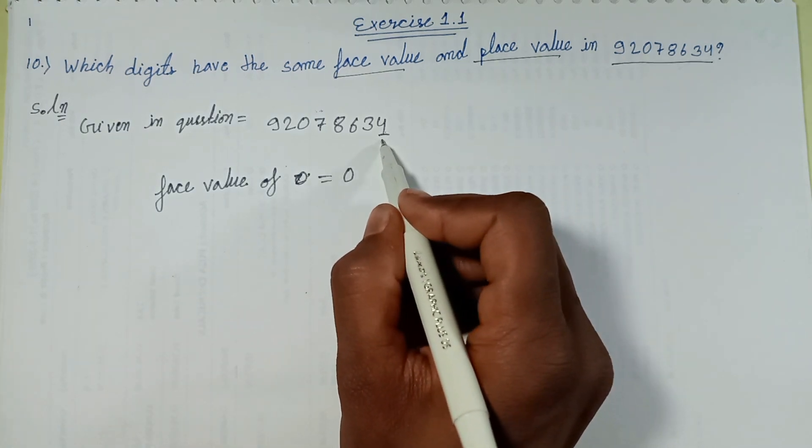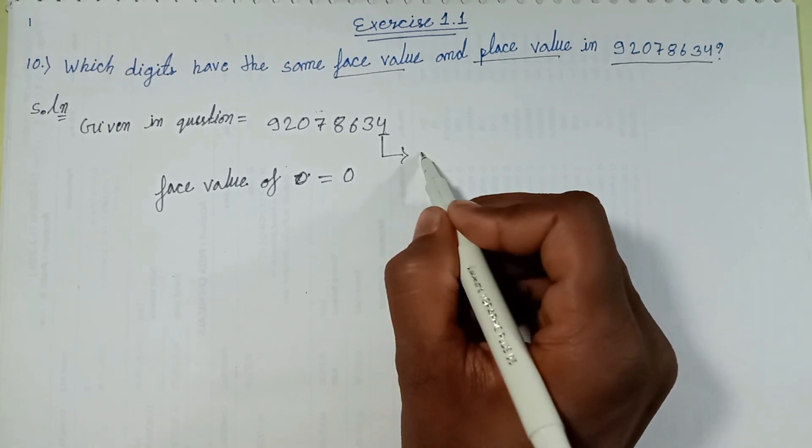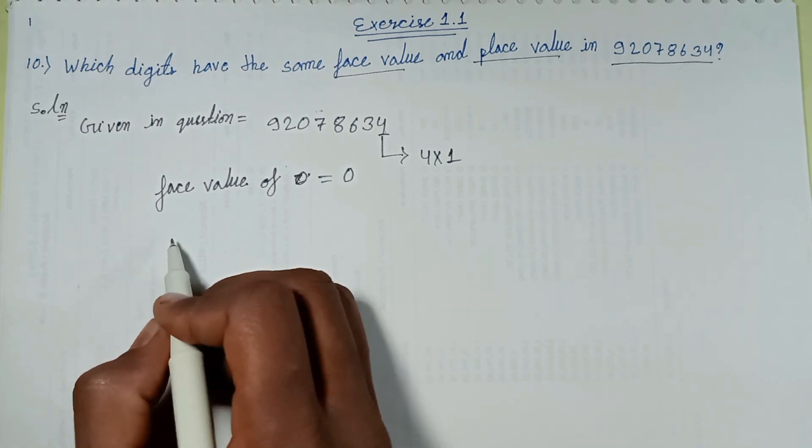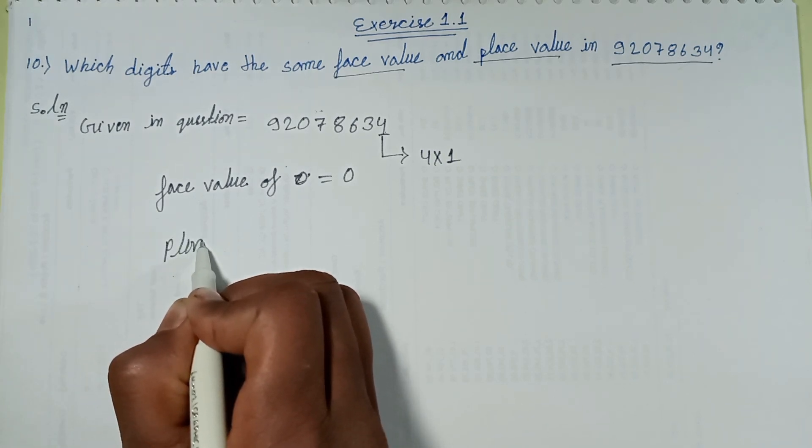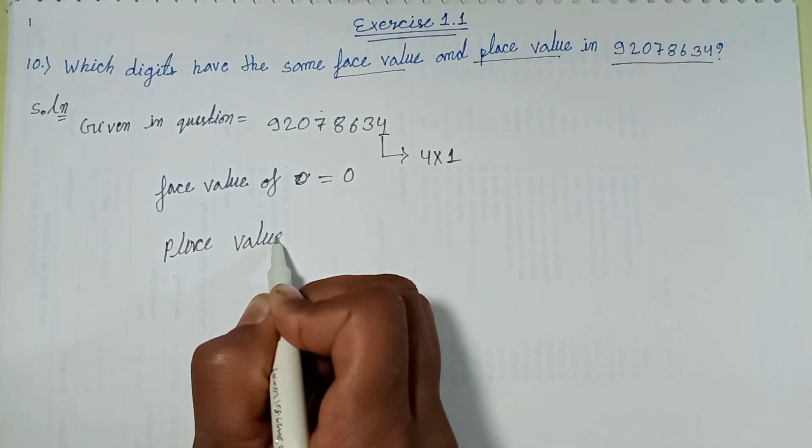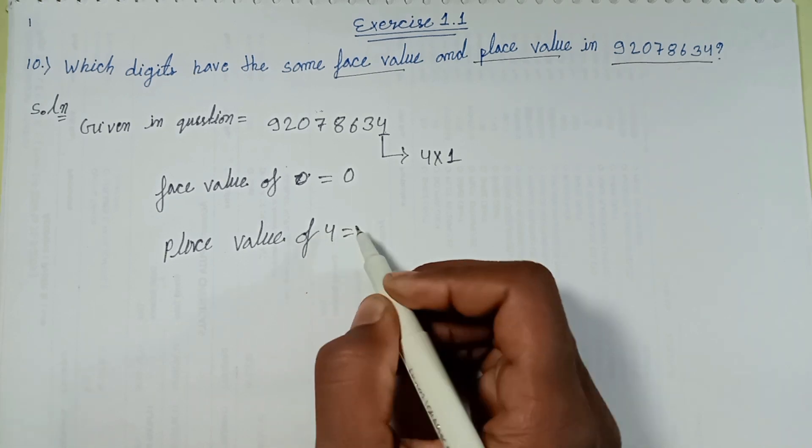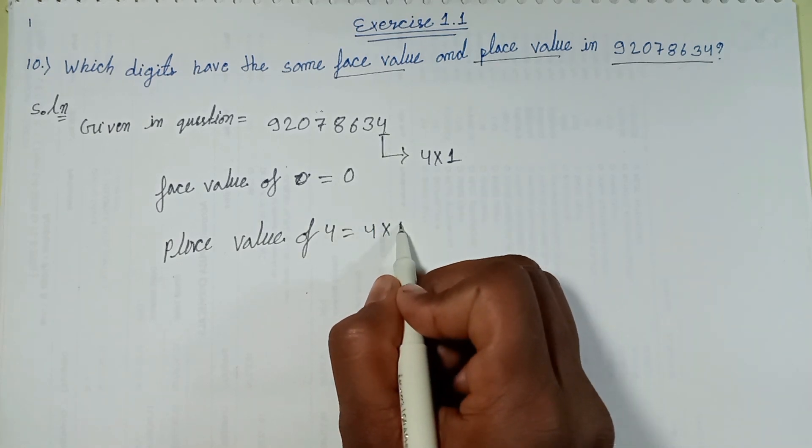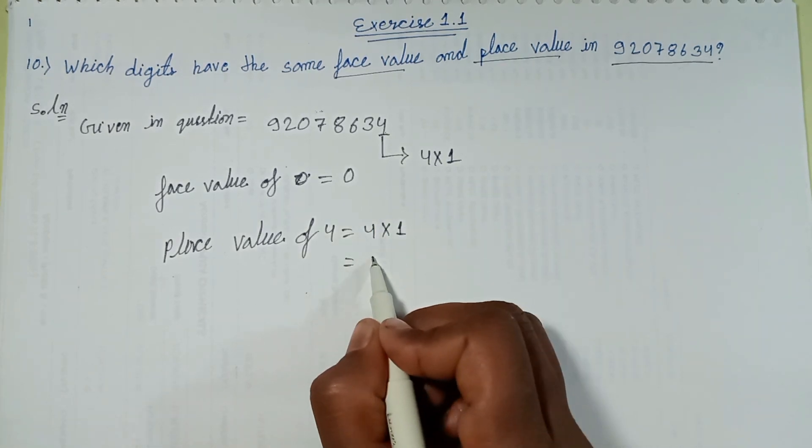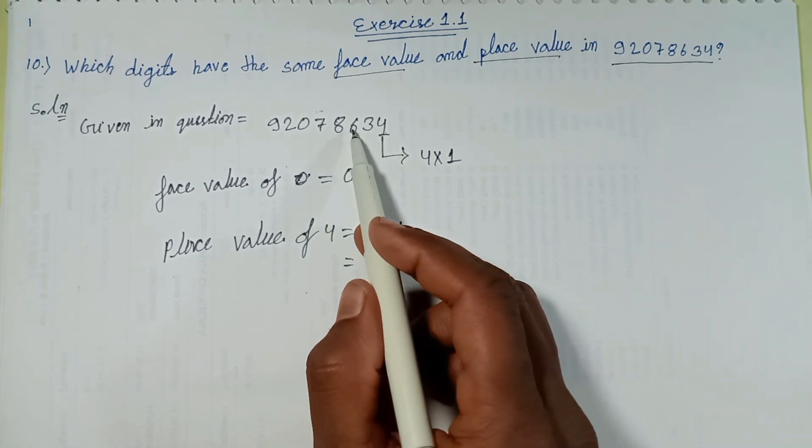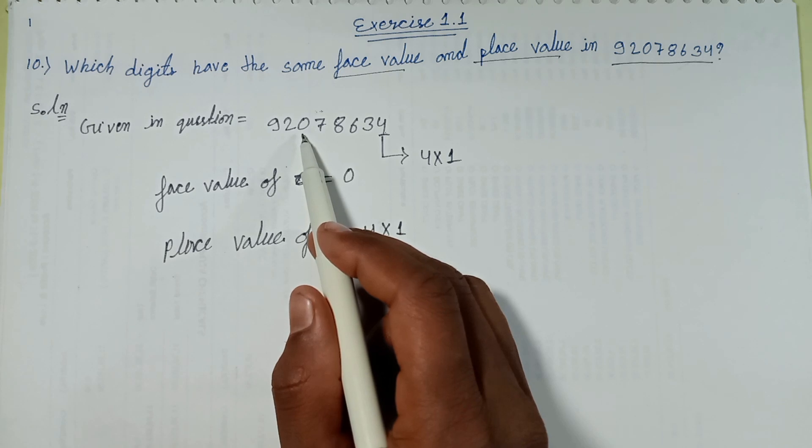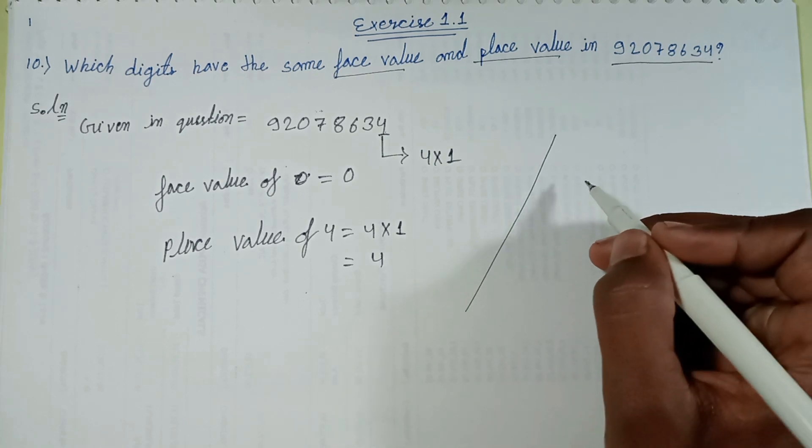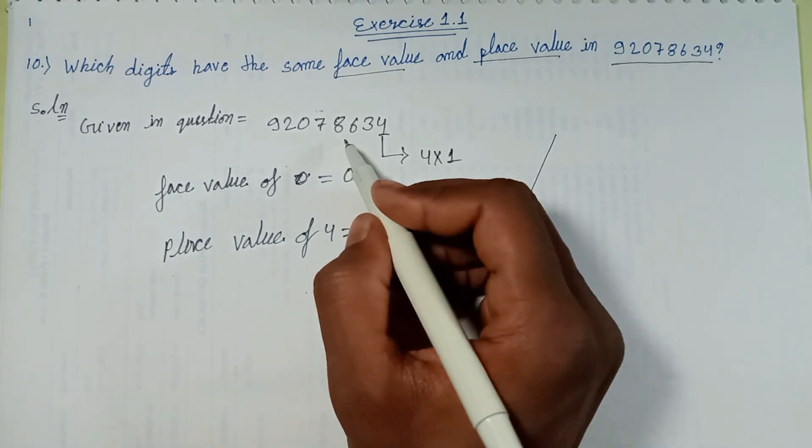Place value of four is four multiplied with one. Place value of four, four multiplied with, four units, units place with one is four. Any number multiplied with zero, upcoming answer is zero.